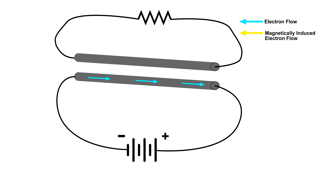Now I have reversed the battery. And notice electrons are still flowing from negative to positive, but of course they are moving in the opposite direction in the wire. Just like before, simultaneously there is a magnetic field being built, but notice the color is different because this magnetic field is opposite from the first one.